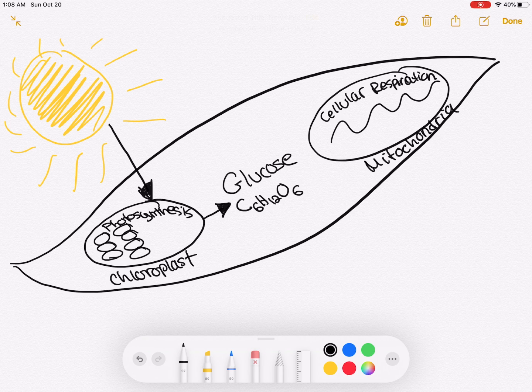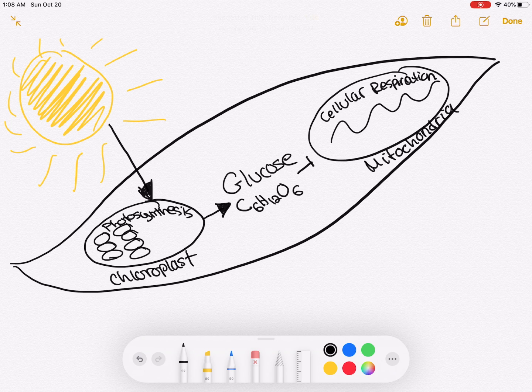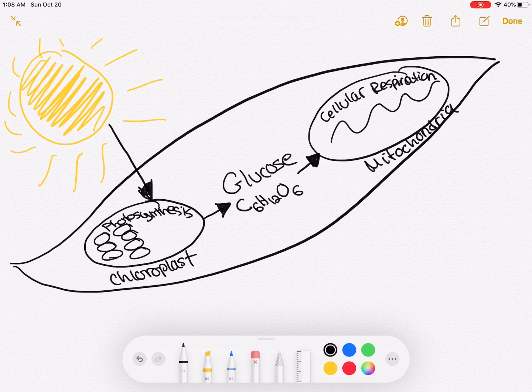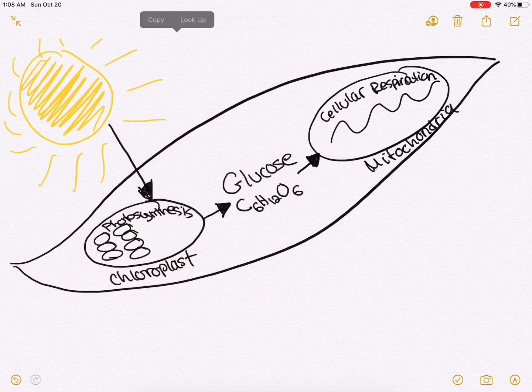And then the next direction says to draw an arrow from glucose to the mitochondria. Remember that in cellular respiration, one of the reactants is glucose.